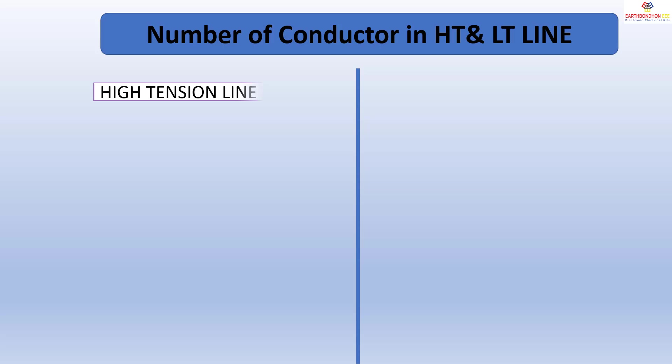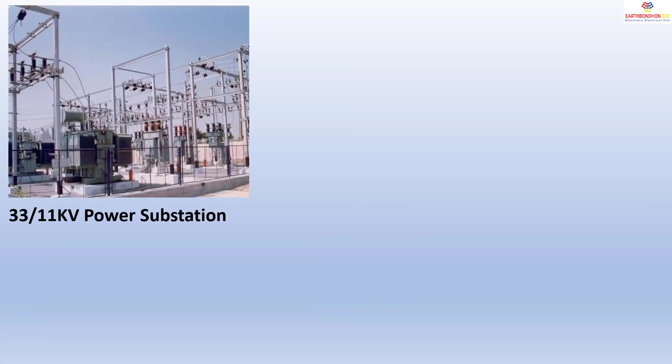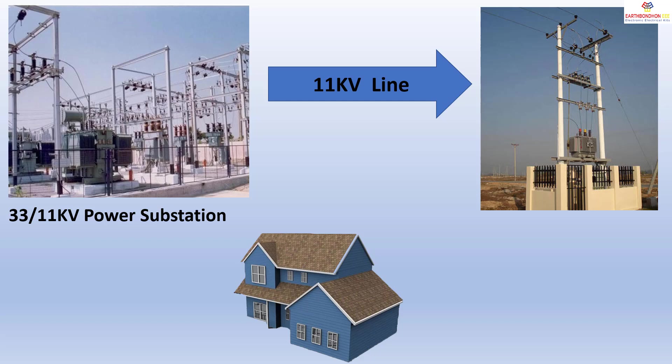Number of conductors in HT and LT lines: 33 kV/11 kV power substation, 11 kV line to LT line.